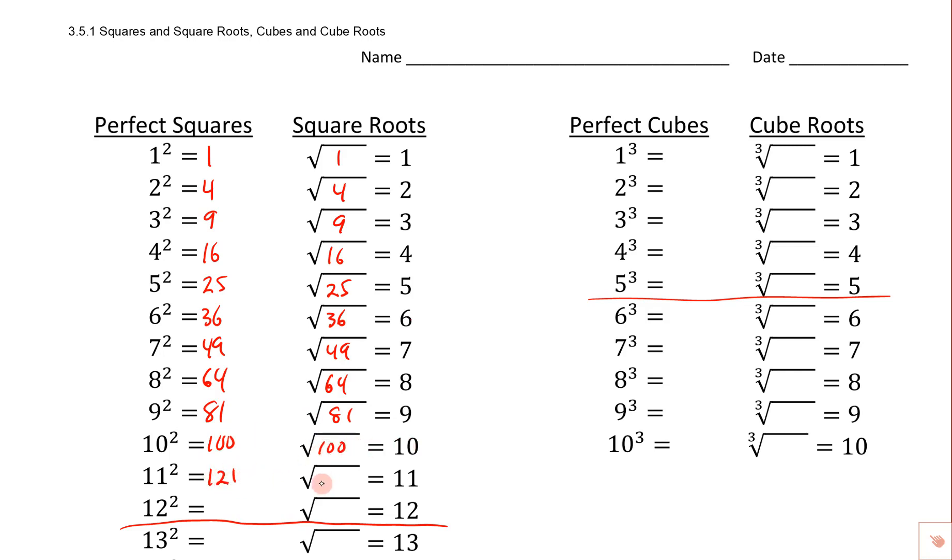11 squared is 121, so the square root of 121 is 11. 12 squared is 144, so the square root of 144 would get us right back to 12. And the same thing works here when we're talking about perfect cubes.